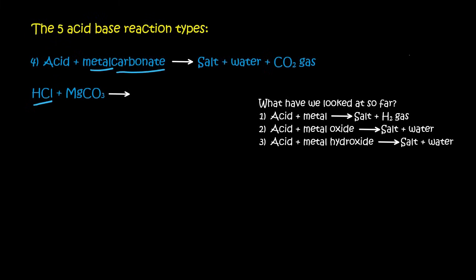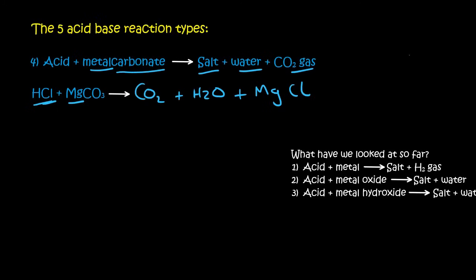Now the product should be a salt, water, and CO2. So CO2 is easy because it's just CO2, literally. And then water is just H2O. And then for the salt, you just see what's left over. Well, we haven't used magnesium, and we haven't used Cl. And so we say MgCl. But now on the periodic table, Mg is plus two, and Cl is minus one.